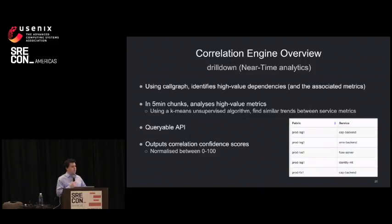What we do is in five-minute chunks, we grab these metrics, and then we do k-means analytics on them to find similar trends between service metrics. And we have a queryable API where we can say, between this time and now, I'm seeing something funky on this service. Try and see if you find something that's similar on one of my dependent services. And it will give me that back. You get back a list of services and the fabric and the confidence score that we have that that particular service is the problem.